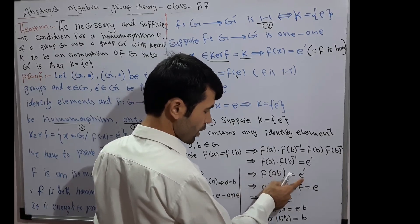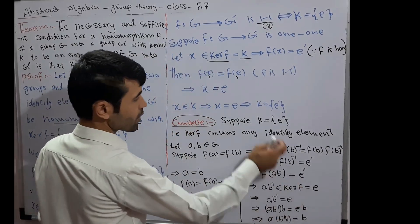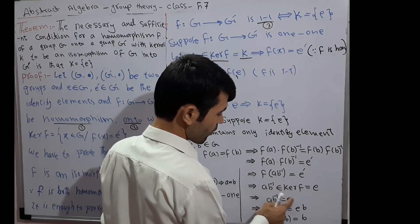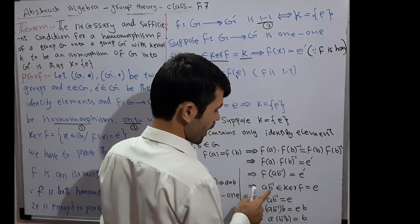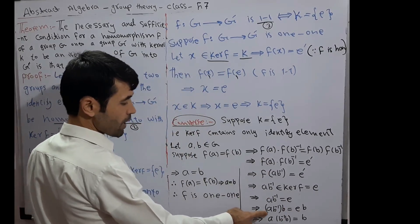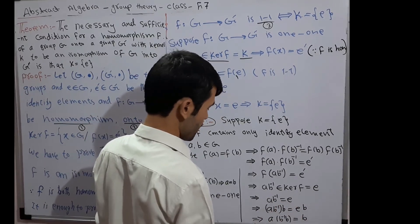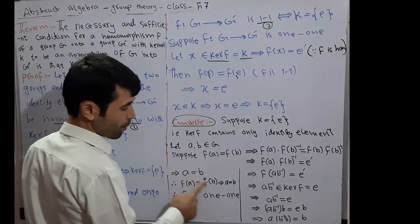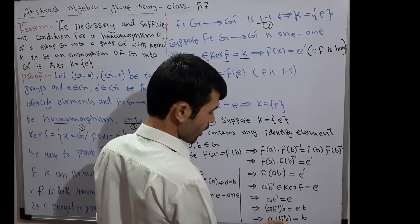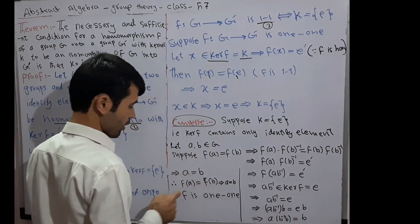Since F(A · B⁻¹) = E', we have A · B⁻¹ belongs to kernel F = {E}. Since kernel F has only one element, A · B⁻¹ must equal E. This implies A · B⁻¹ · B = E · B. Since B⁻¹ · B = E, the left side gives A · E = A, and the right side gives B. Therefore A = B.